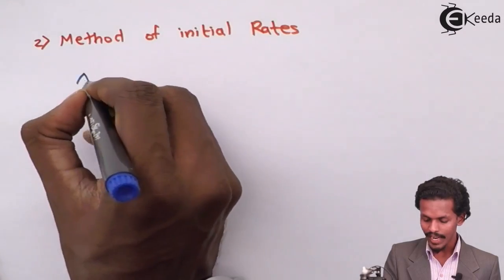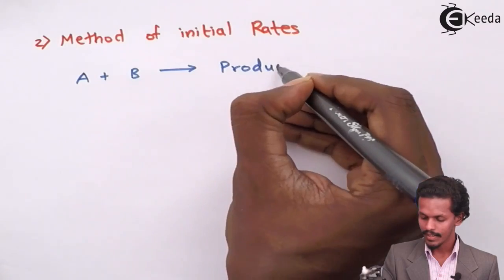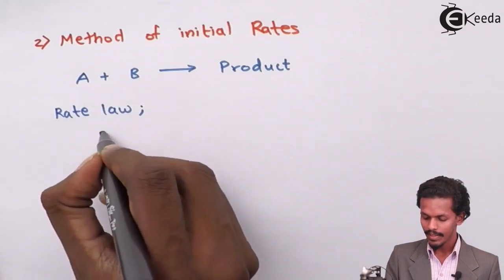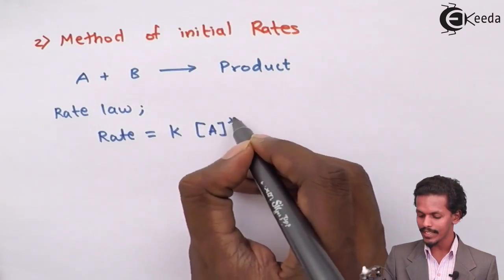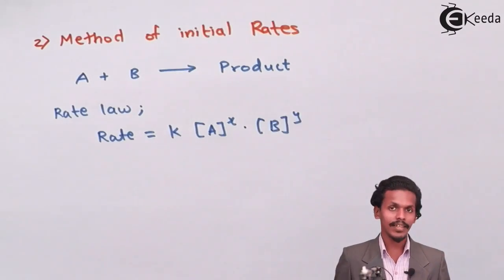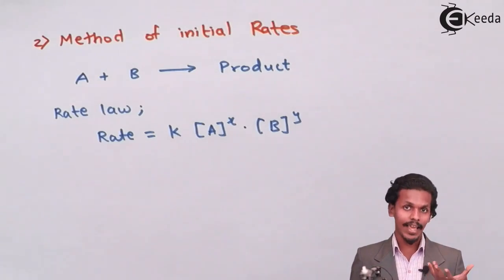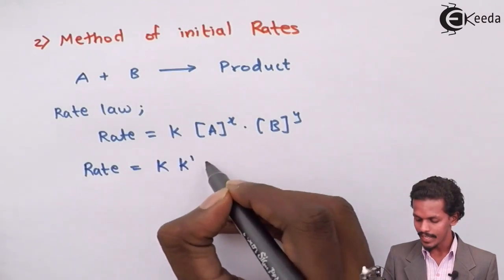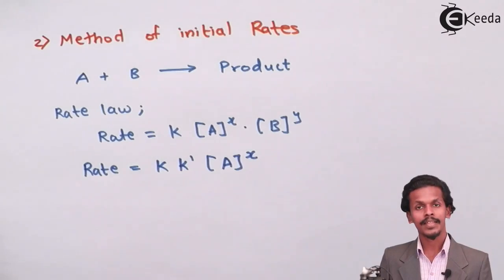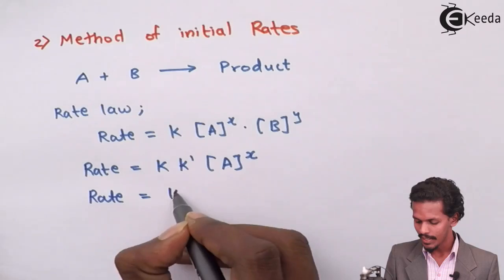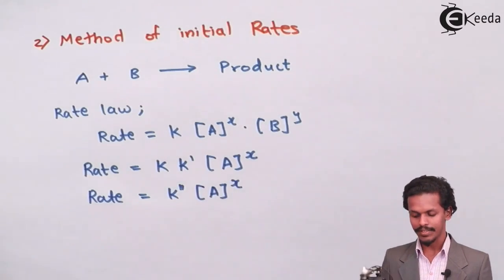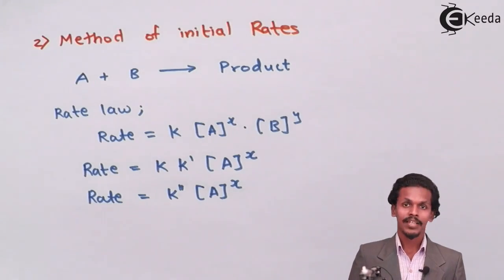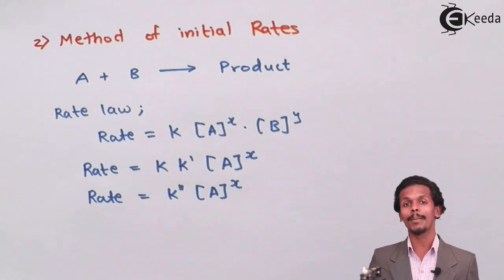For the reaction A plus B giving a product, the rate law is: rate equals K times concentration of A raised to X times B raised to Y. If we take concentration of B in excess, then A is isolated and the rate law becomes rate equals K times K-dash times A raised to X, which simplifies to rate equals K-double-dash times A raised to X. We then predict a graph of this to determine the value of X.